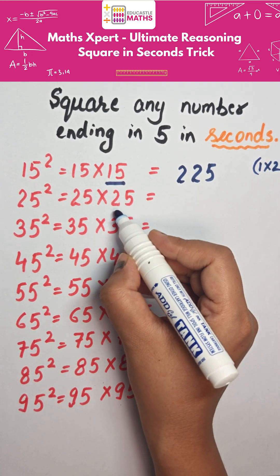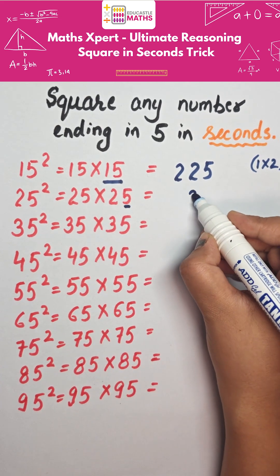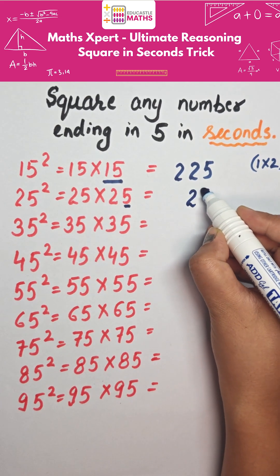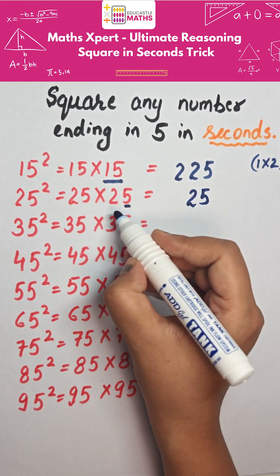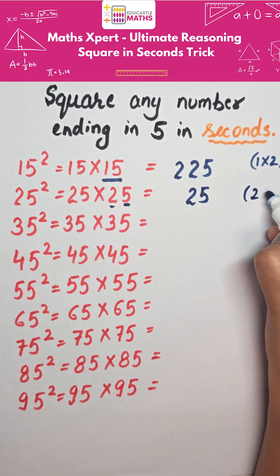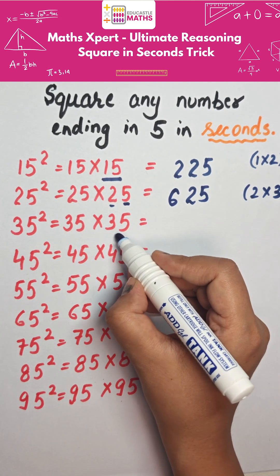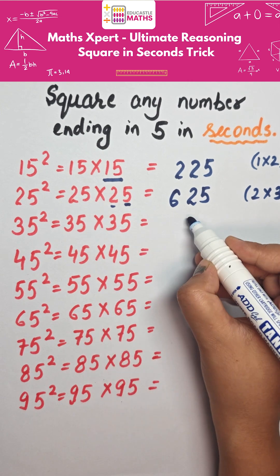Next, 5 times 5 makes again 25. Then the number next to 2 is 3, that is 2 times 3 makes 6. So the answer is 625.